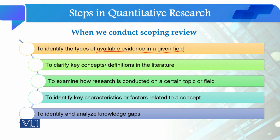The second objective is to clarify key concept definitions in the literature. On the basis of the scoping review, we are able to understand the key concepts. For example, if there is a public health crisis or an economic crisis, you study how different scientists are defining it — how different social scientists are defining and assessing the same social situation.